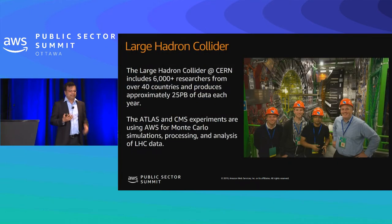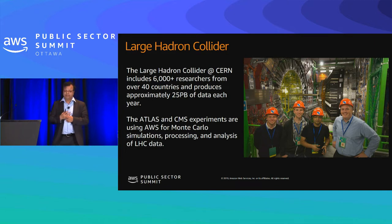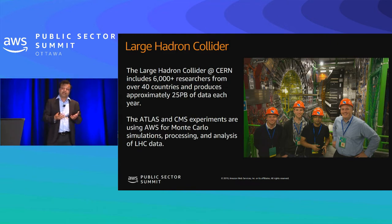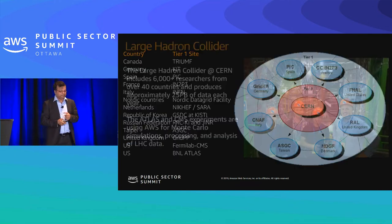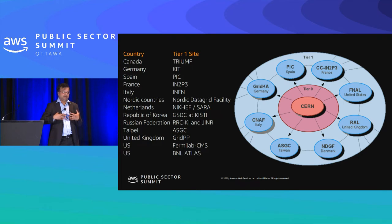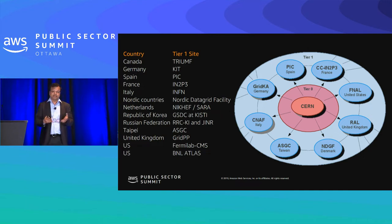Here is one case study. I came from CERN, which is an international collaboration where many countries participate. This is the Large Hadron Collider at CERN, and this particular picture is one of the detectors — it's called the Silicon Detector — and it's me and my colleagues there. CERN has roughly about more than 6,000 researchers from around 40 countries, and it produces approximately 25 petabytes of data. There are two major experiments: ATLAS and CMS collaborations. Countries involved include Canada, Germany, Spain, UK, US, and others. After the collision happens at CERN — at 95 nanoseconds — the data is stored at tier zero and then distributed to various tier one centers, one of which is Canada as well as the US.